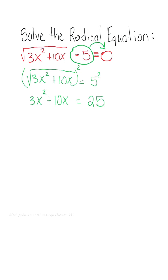Now we're going to bring 25 over and set the equation equal to 0. So we have 3x squared plus 10x minus 25 is equal to 0.